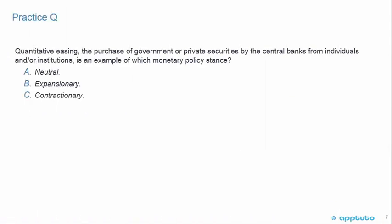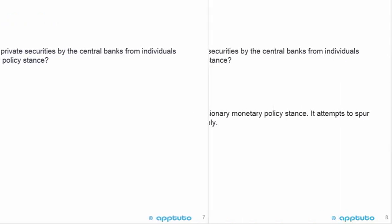And one last practice question to finish this LOS. Quantitative easing — the purchase of government or private securities by the central banks from individuals and/or institutions — is an example of which monetary policy stance? A, neutral; B, expansionary; or C, contractionary?